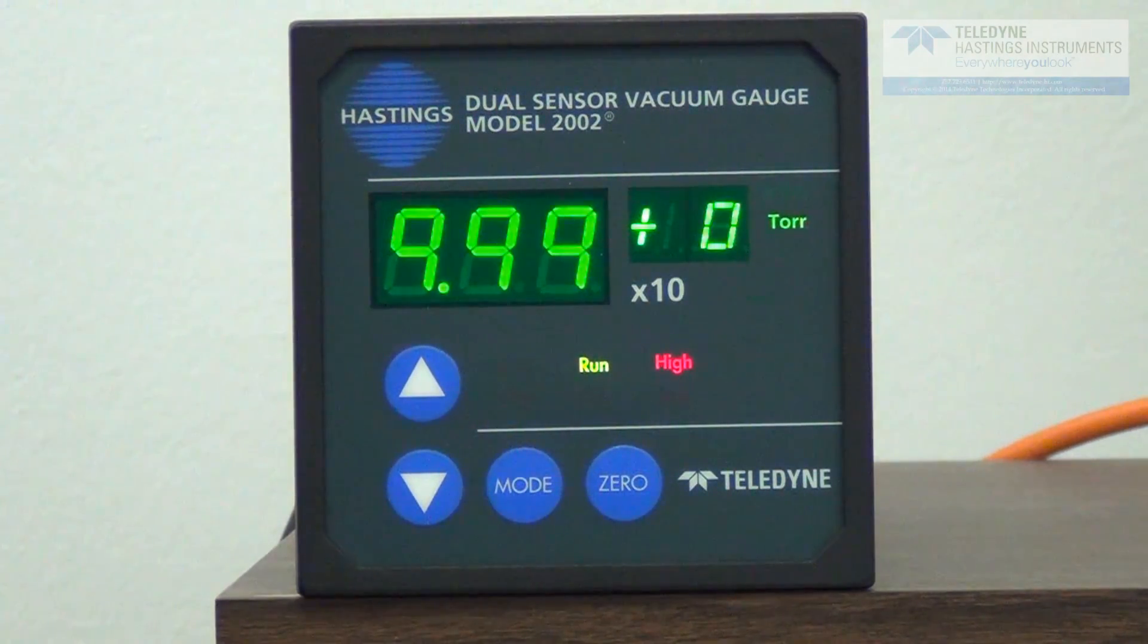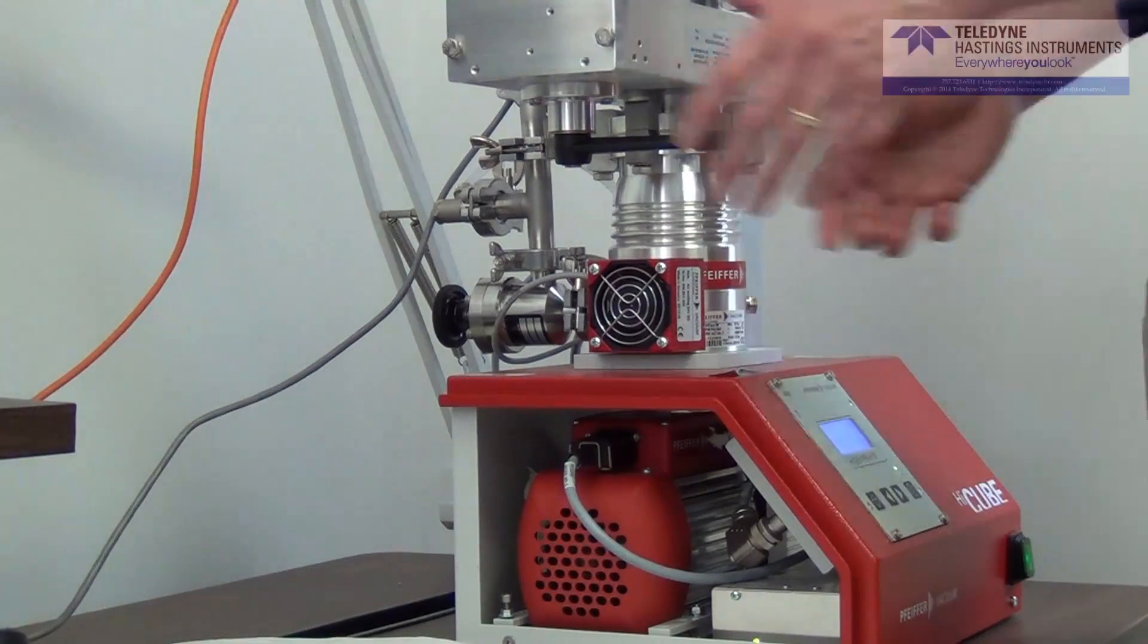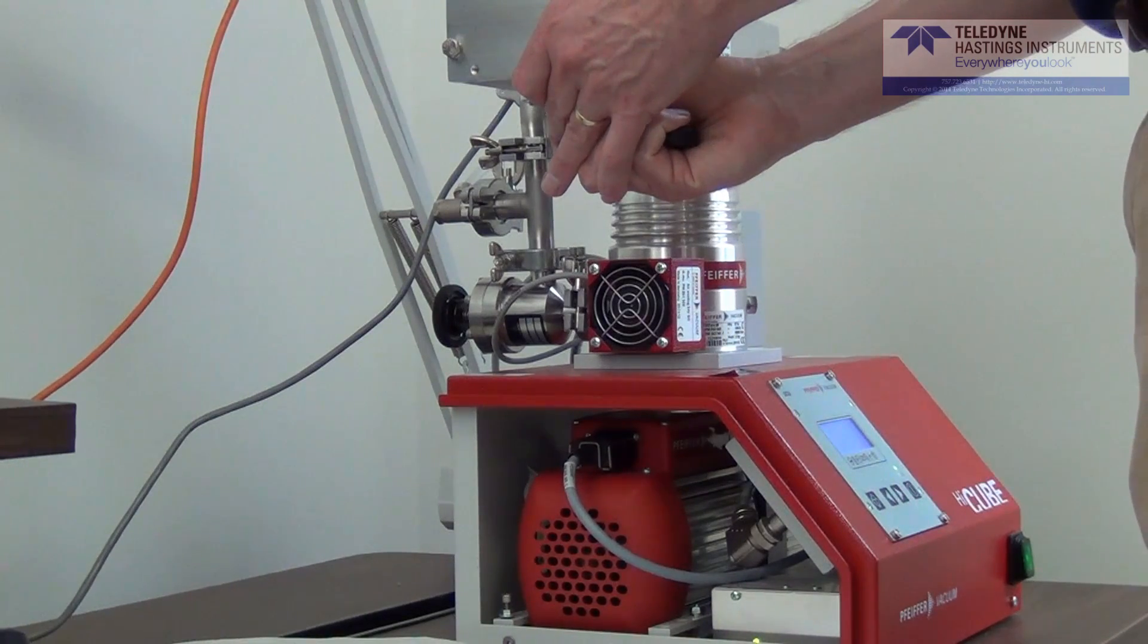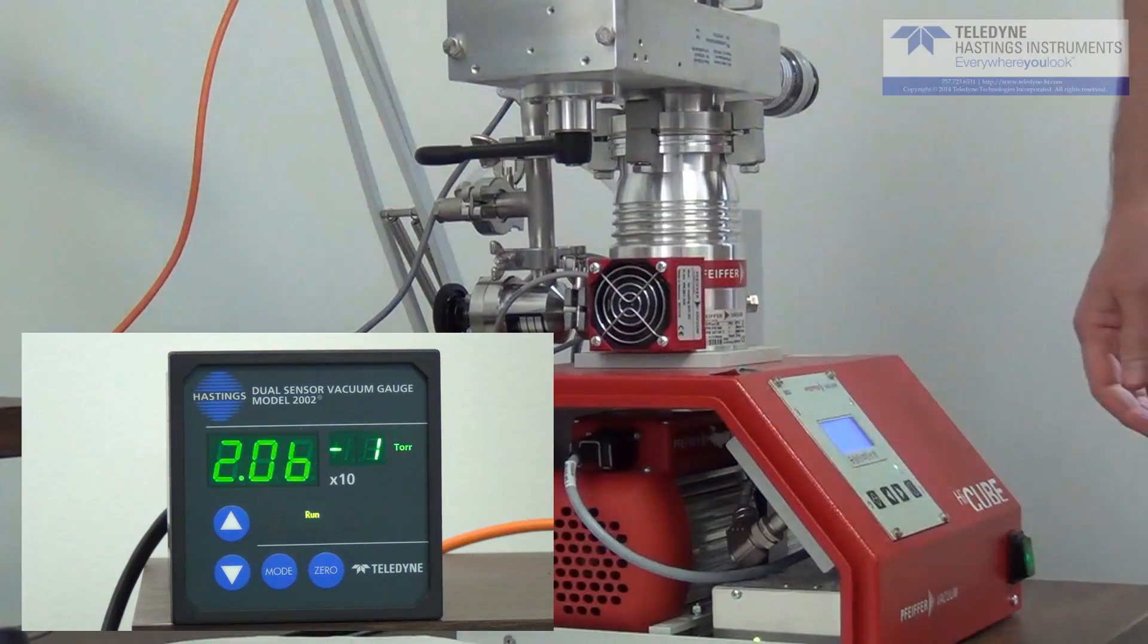Down to 10 torr. And you just see that the set point light just went out. And we've passed 8 torr. Now we're looking at only the thin film Pirani sensor. So now we're below 3 torr. And I'm going to go ahead and throw the main gate valve. And you'll see that the HPM 2002 responds very quickly to the changing pressure.